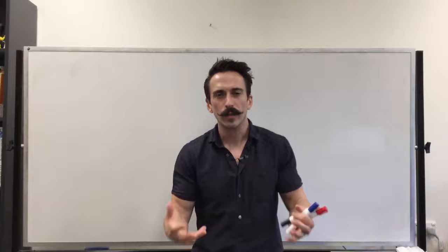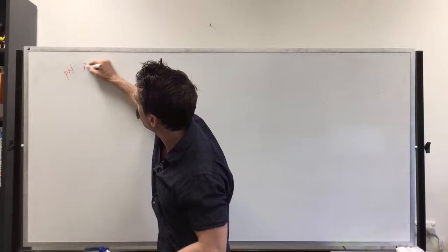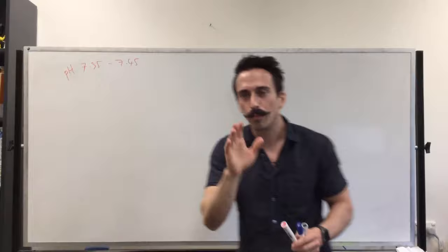Now buffers resist drastic changes in pH. We know that our blood has a pH of between 7.35 and 7.45. If the blood pH goes below 7.35, it's becoming too acidic. If it goes above, it's becoming too alkaline.